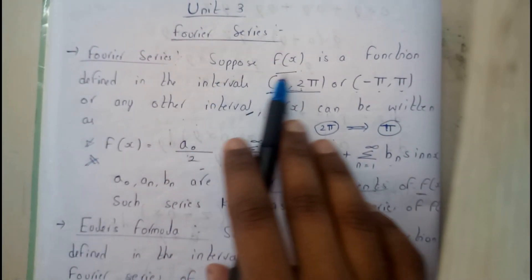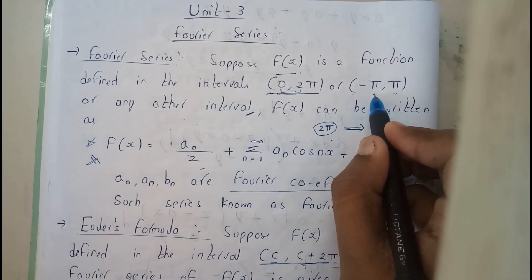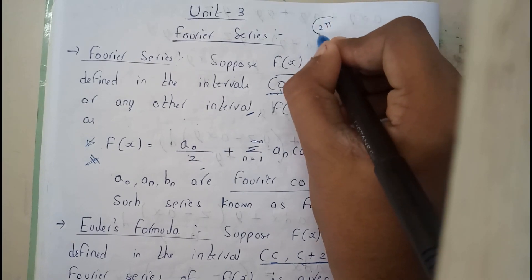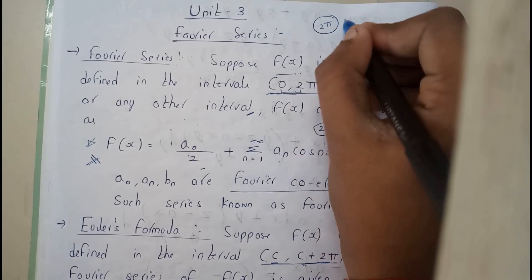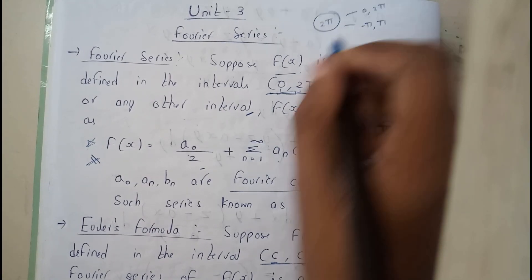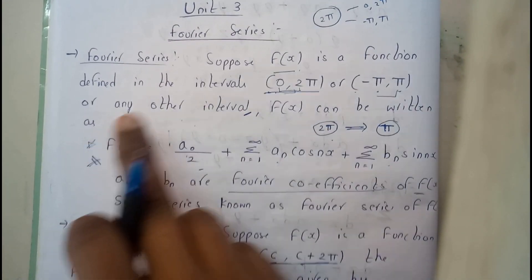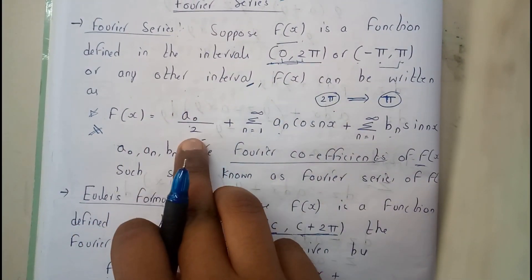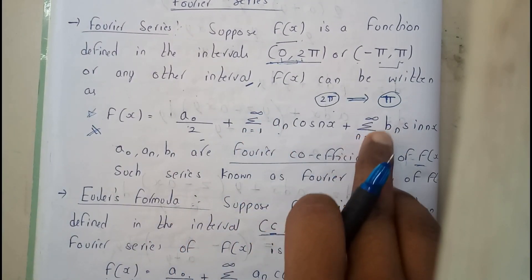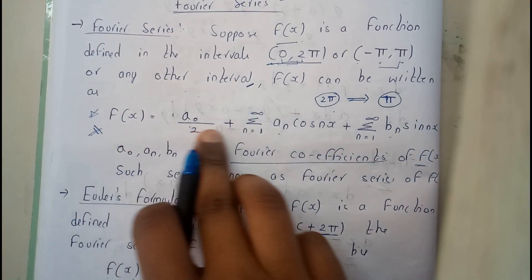Suppose f(x) is a function defined in the interval [0, 2π] or [-π, π], so the difference should be 2π. Or any other interval, f(x) can be written as: f(x) = a₀/2 + Σ(n=1 to ∞) aₙcos(nx) + Σ(n=1 to ∞) bₙsin(nx). So this is the formula.